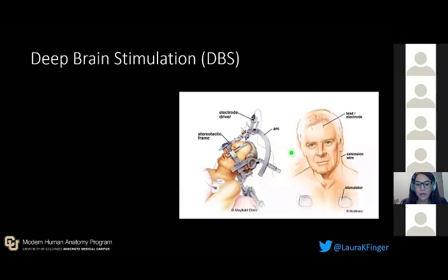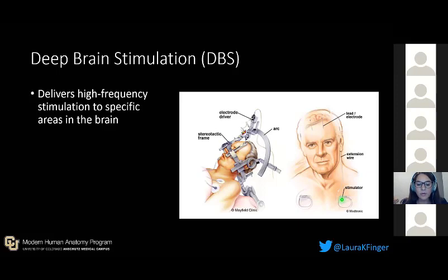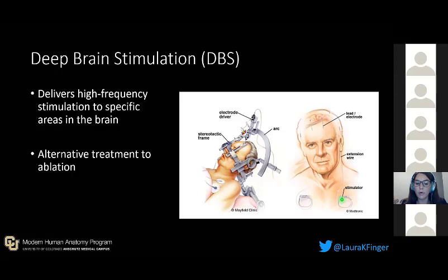Deep brain stimulation, or DBS, involves a neurosurgical implantation of electrodes in the brain. They are connected to an extension wire, which is then connected to a stimulator implanted in the chest. DBS delivers high-frequency stimulation to specific areas in the brain, but the mechanism is not fully understood. DBS is an alternative to ablation, which is permanently destroying brain tissue with a laser. Unlike ablation, DBS is largely reversible because it can be turned off, it's titratable, more precise, and destroys less brain tissue overall.